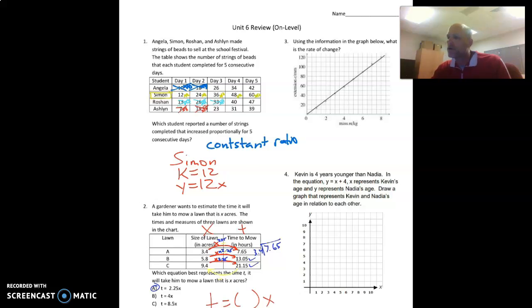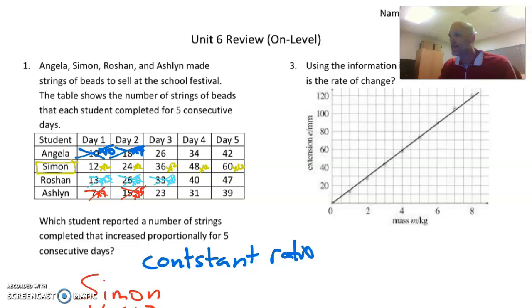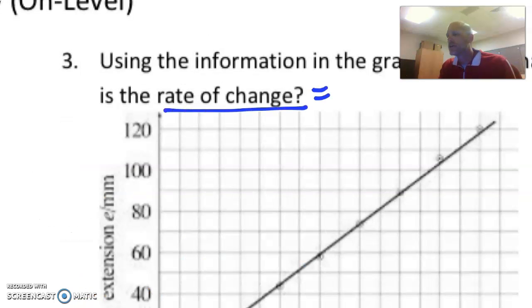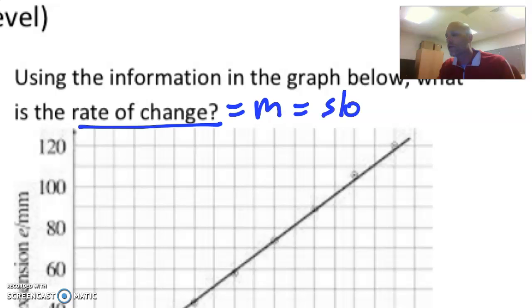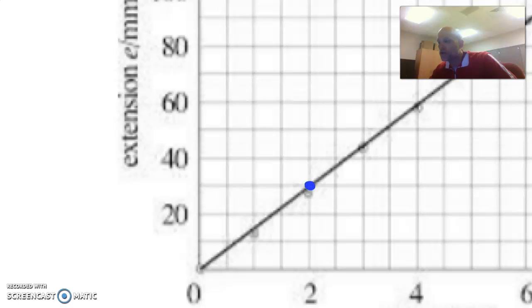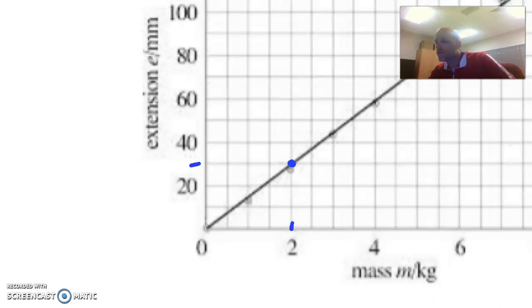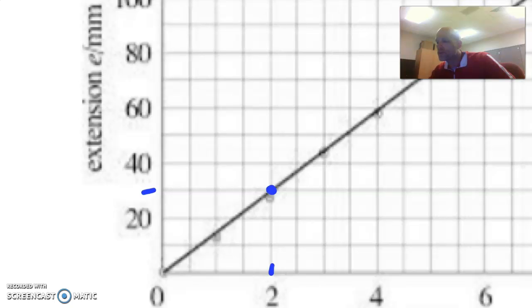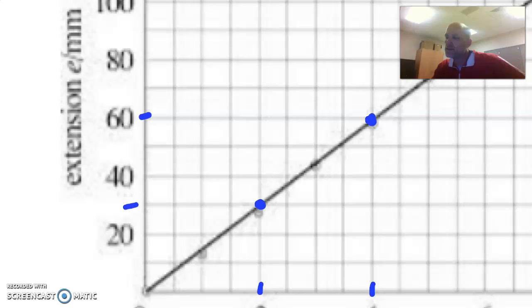Number three, using the information in the graph, what is the rate of change? Rate of change is M, right? Which is slope, which is rise over run. Rise over run. So we need to find some points that it actually meets up. Like that. 2 and what? 30, I guess. There and there. So let's find another one. 4. I want it to meet perfectly. 4 and 60. So there's multiple ways to do this. This is a positive. Turn this into a triangle.